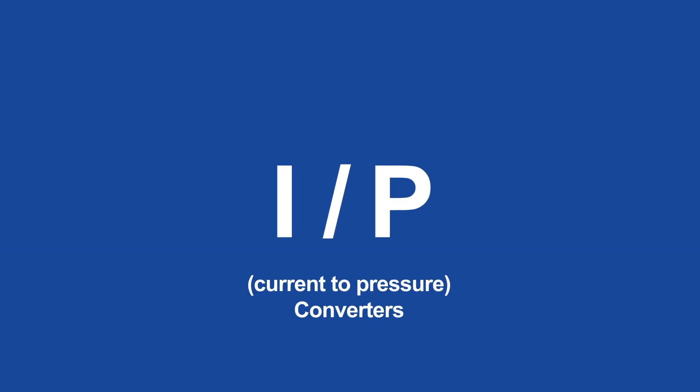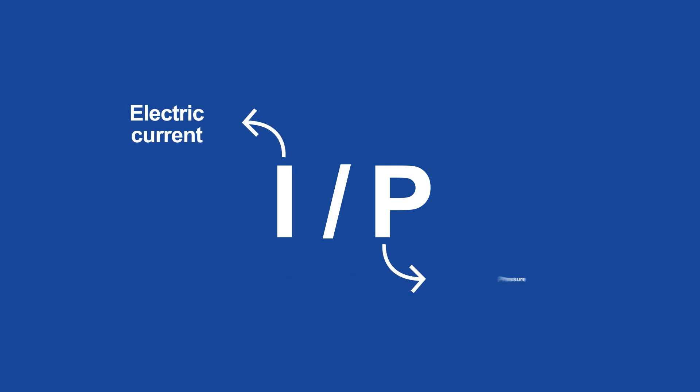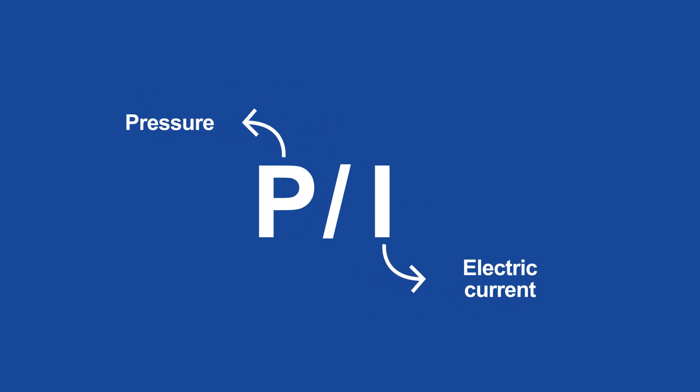Other names for electronic pressure measuring instruments include IP, current-to-pressure converters, and IP transducers, where the I always stands for electric current and the P for pressure, and PI, pressure-to-current converters.